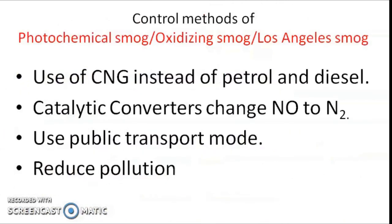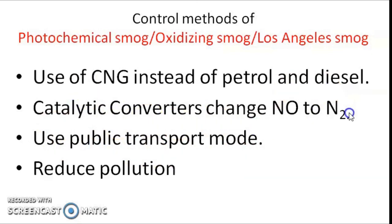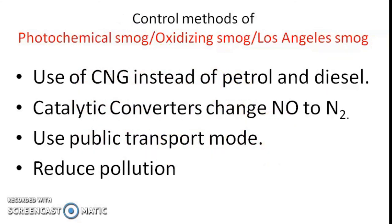How can we control photochemical smog? We can control it the same way as classical smog — by reducing pollution. Use public transport to reduce the number of vehicles on the road. We can have catalytic converters attached to vehicular and industrial exhaust so that nitric oxides are released as nitrogen and not available for reaction. Instead of petroleum products or fossil fuels, go for CNG or renewable sources of energy like solar and wind. These are the technologies to control photochemical smog.